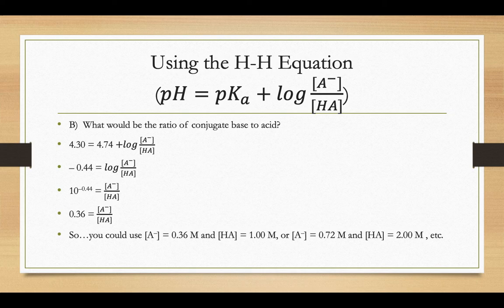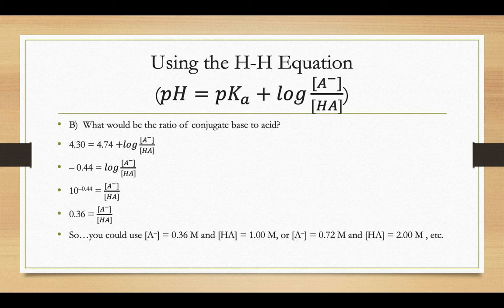So you could have molarities of 0.36 for your A minus and 1 for your HA, or 0.72 molar and 2 for your HA. Some fraction there that would reduce down to 0.36.